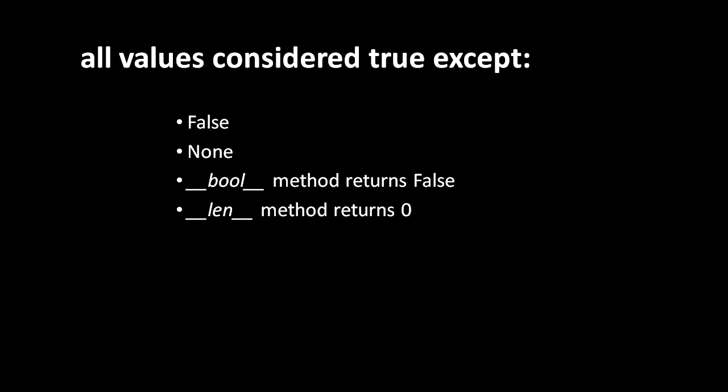Obviously the Boolean value false has a truth value of false, and the Boolean value true has a truth value of true. But what about other objects? The special value None is always considered false, but all other objects — such as instances of a class you create — are by default considered true.